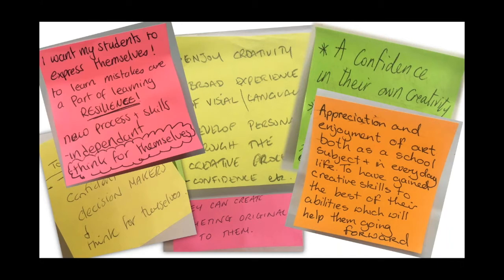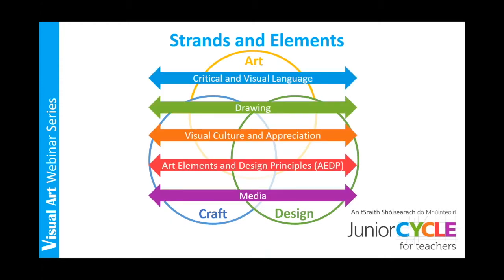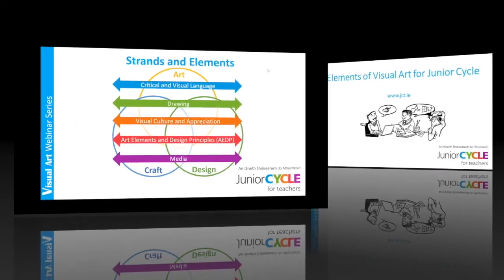As you can see, the responses demonstrated a strong link with our aim for the new Junior Cycle visual art course and really showed how our teachers have a very strong shared vision of how important our subject is to a young person's growth and development. There are three strands in visual art which we are all familiar with and they are art, craft and design. Students may study them together or in isolation. Interwoven through our three strands are our five elements which are really important. We will now take some time to show you images associated with these elements, kindly narrated by some of our Junior Cycle students.